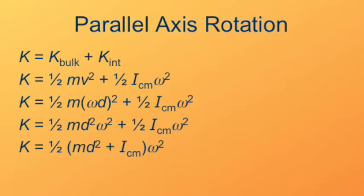So we have one-half the quantity md squared plus the center of mass moment of inertia times omega squared. We'll notice this is in the form of one-half I omega squared, our regular rotational kinetic energy formula, with the moment of inertia just being md squared plus I center of mass.